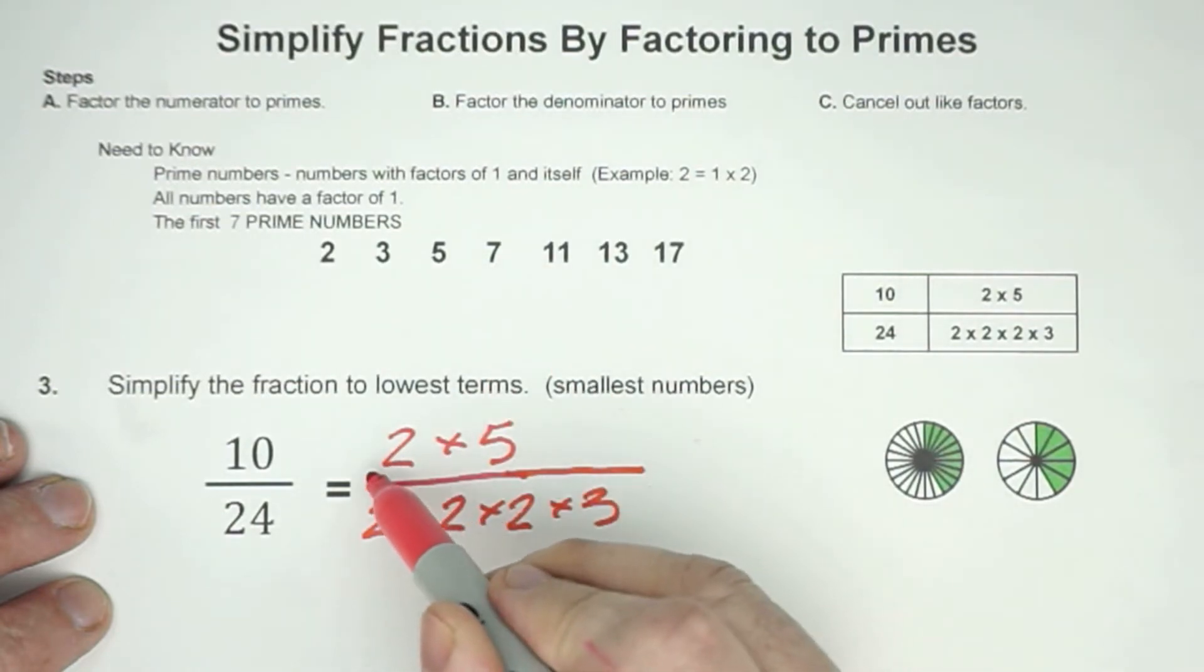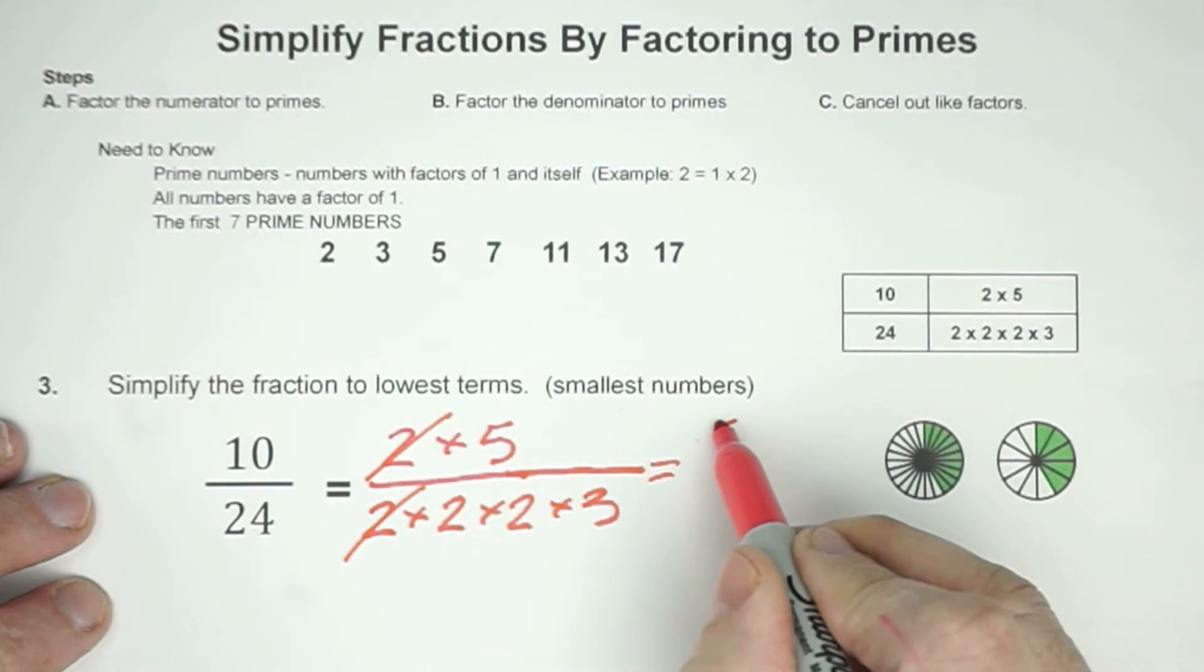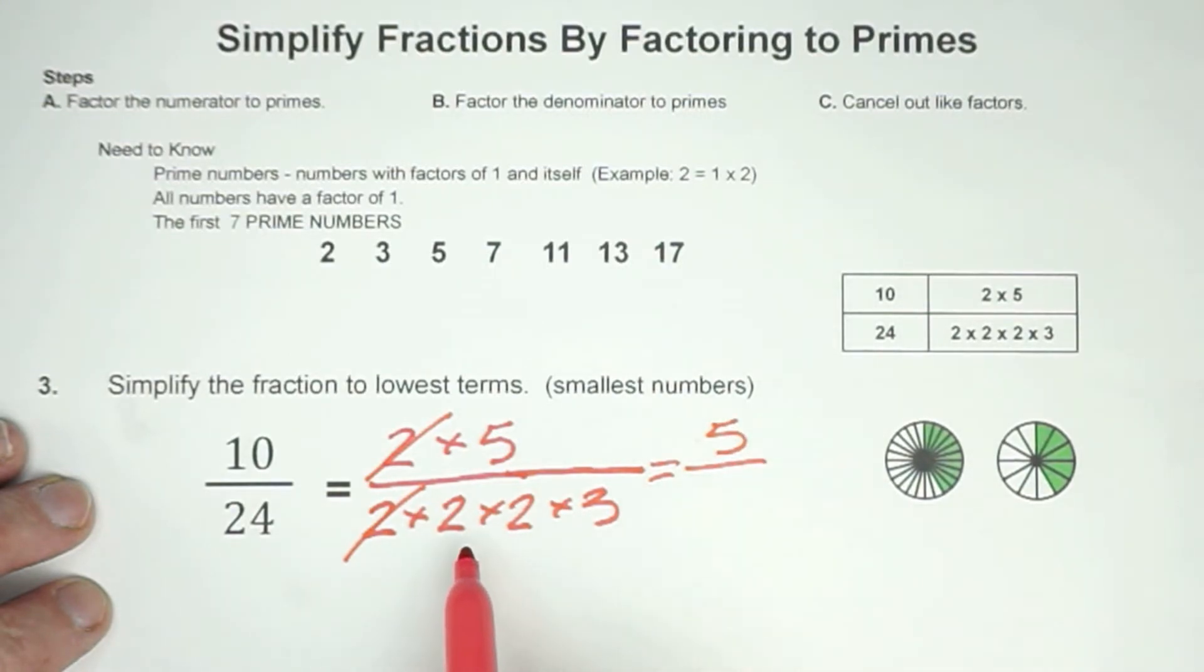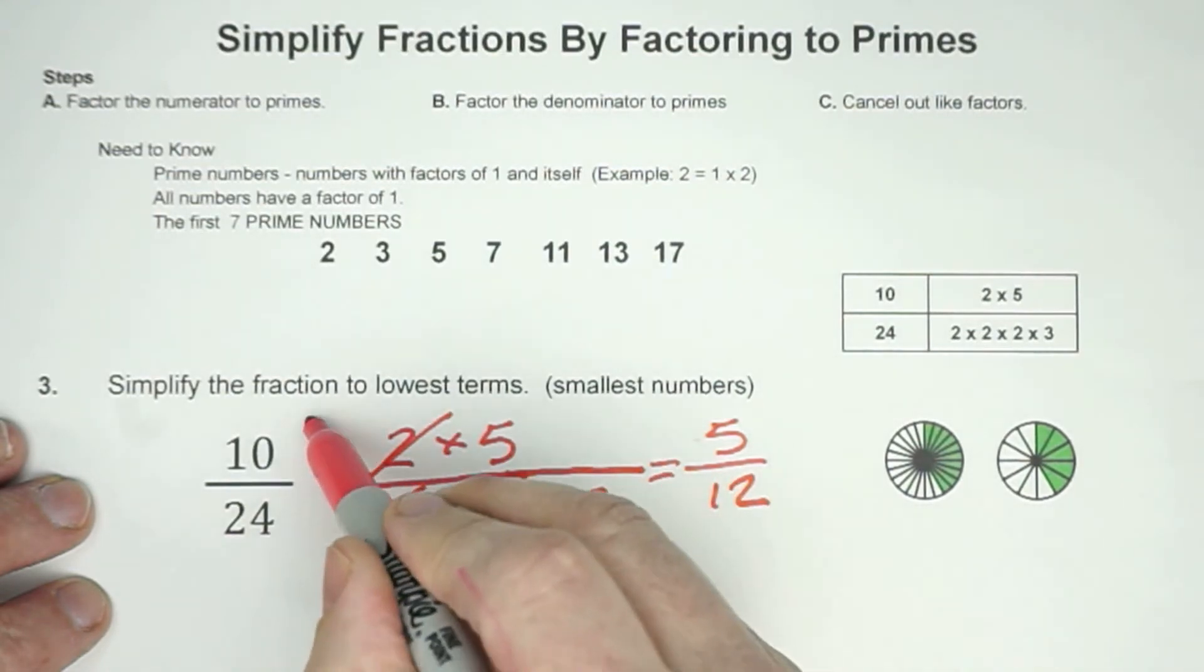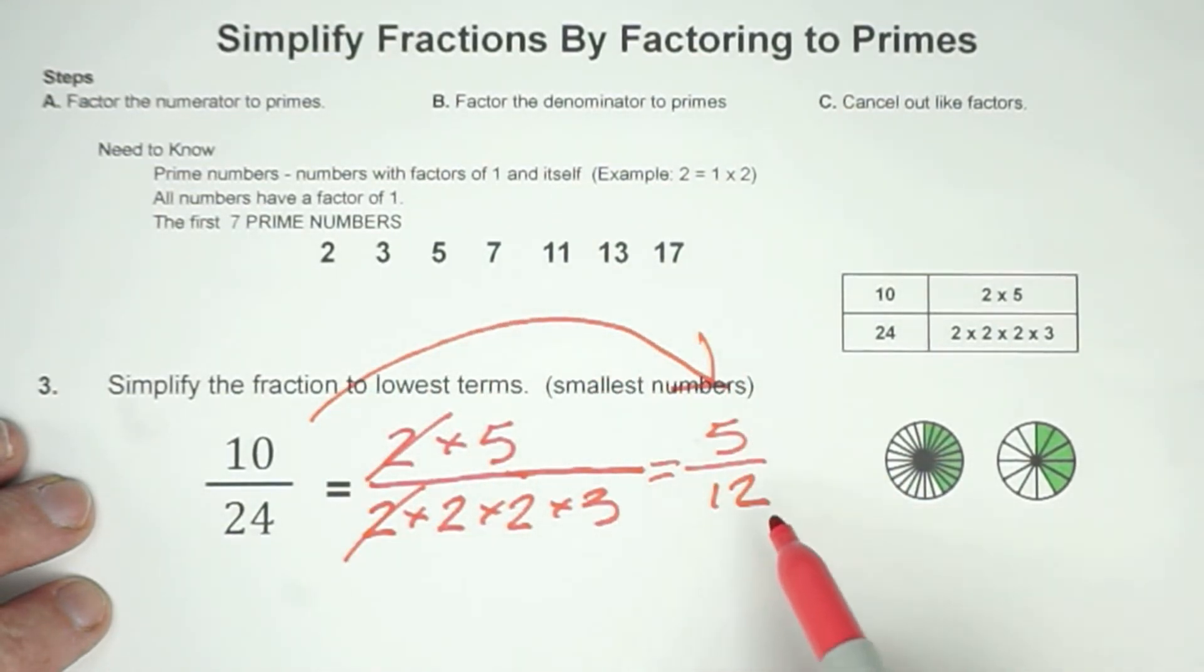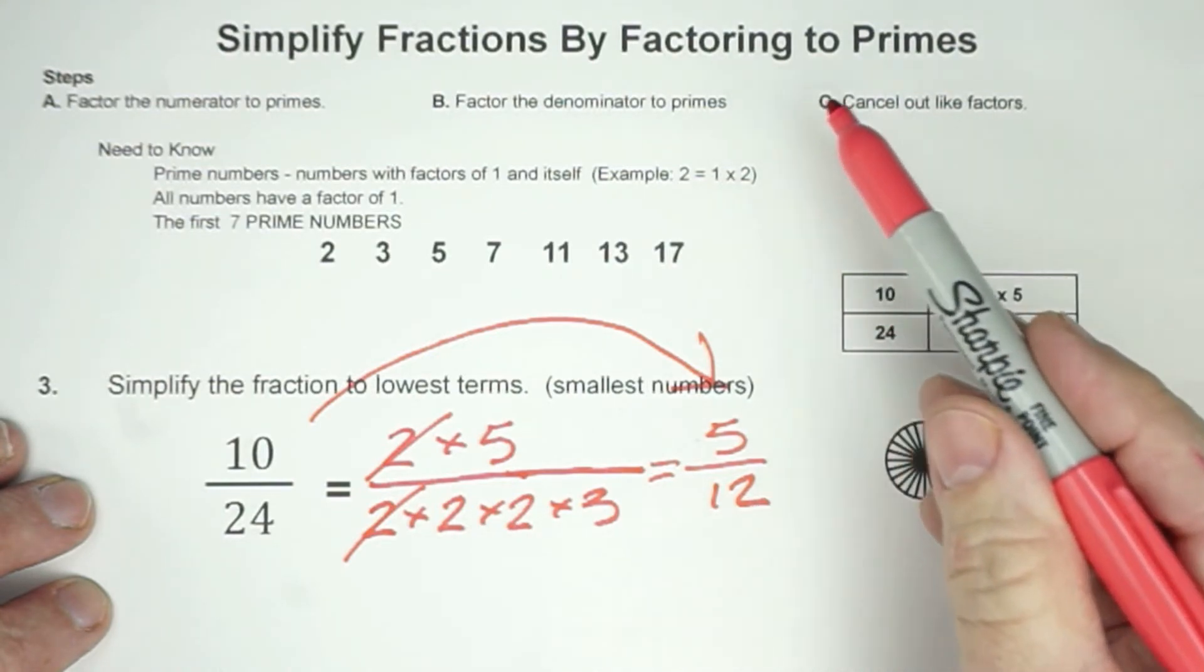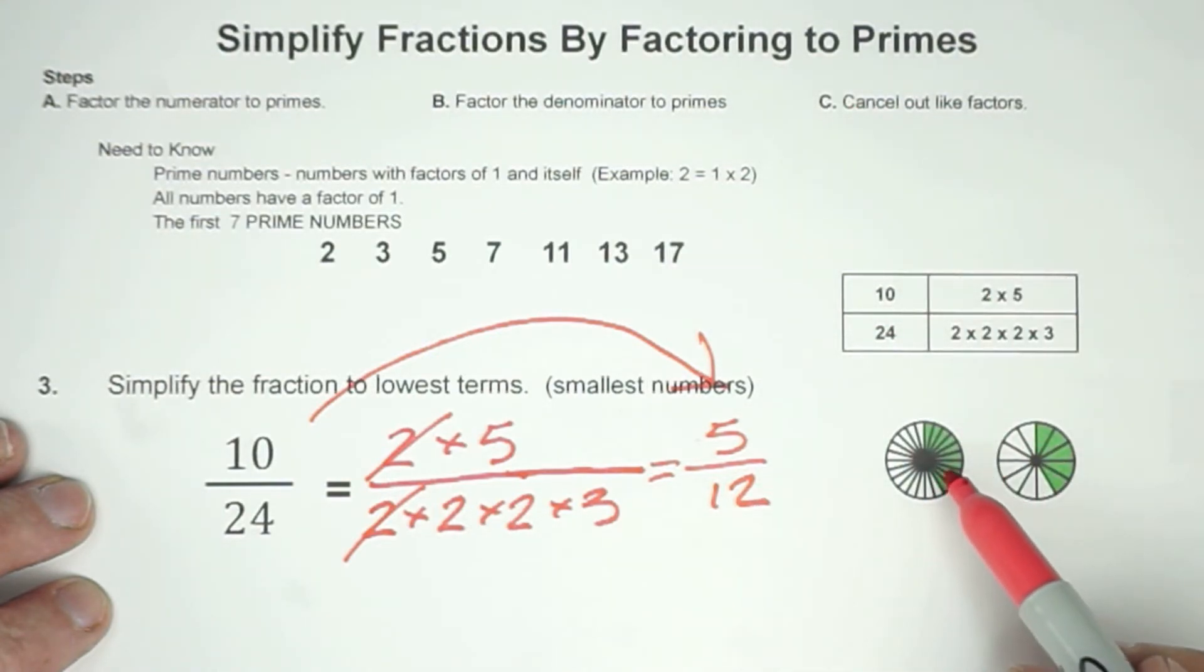We're going to cancel out. I'm only canceling out that. So what we have here is we have our 5 left over, and then 2 times 2 is 4, right? Times 3 is 12. So 10 twenty-fourths will simplify to 5 twelfths, using our strategy of factoring to primes. And again, we're showing that model right here that you can see that it's the exact same size, but we have lower numerators and denominators.